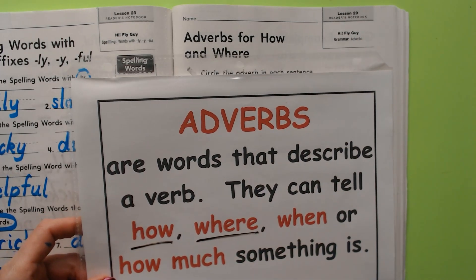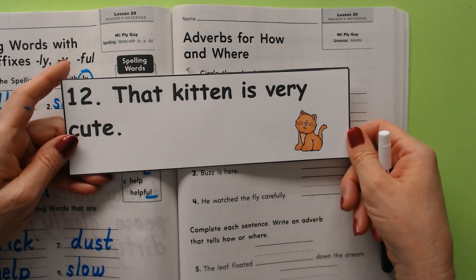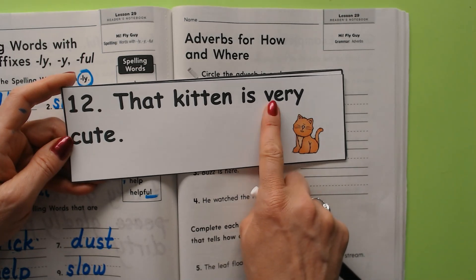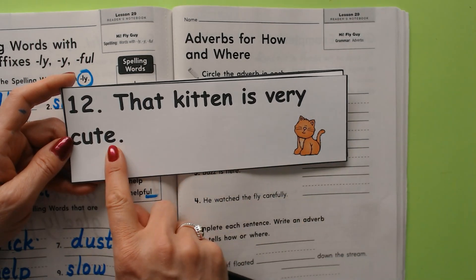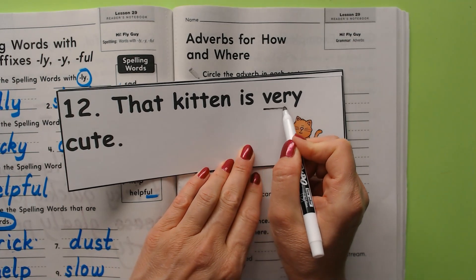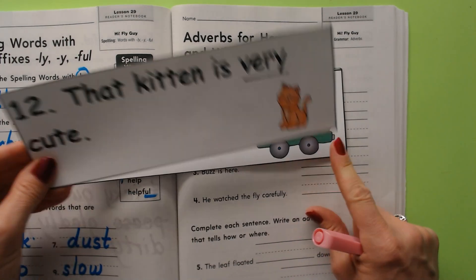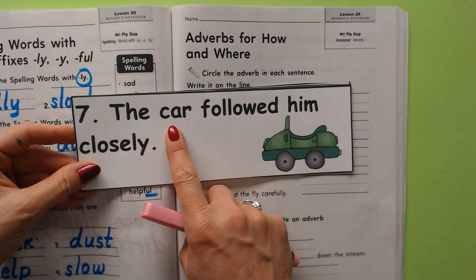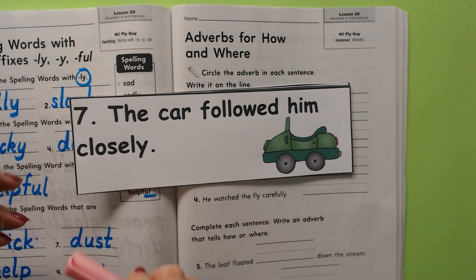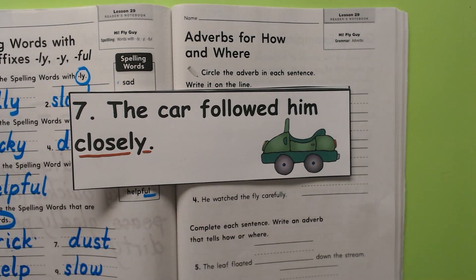For this page I think they're concentrating on how and where. I'm going to show you some sentences that have adverbs in them. 'Very' is an adverb because it tells how much — 'that kitten is very cute' tells how cute. I'll underline very. Next: 'the car followed him closely' — closely tells how it followed him.